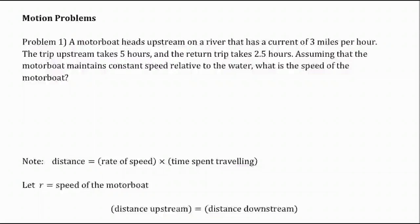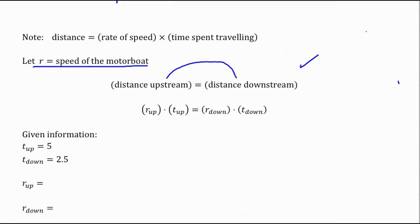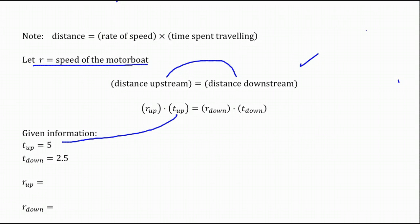We know we're going to go upstream, start at a certain point, turnaround, and the distance that we're going upstream has to equal the distance we're going downstream. We always want for a word problem to declare our variables. So we're going to say let r equal the speed of the motorboat. The distance upstream is going to be the rate of speed upstream times the time. Likewise for going downstream.